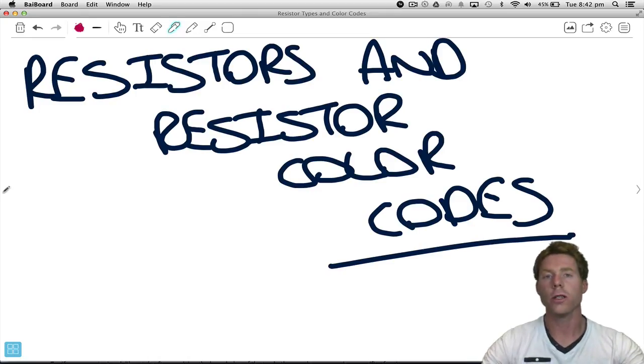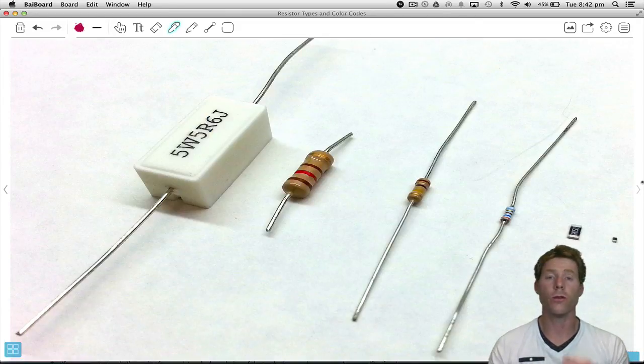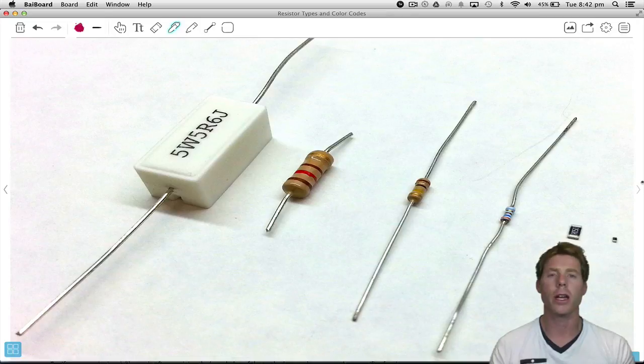Hi everyone and welcome to this lecture on resistors and resistor color codes. What we're looking at this time are different types of resistors, different physical sizes, and we're also going to look at how we read the values off them to figure out how much resistance they have.